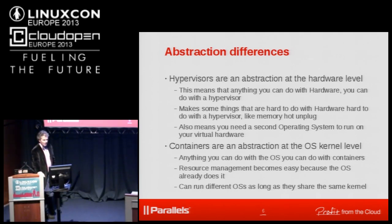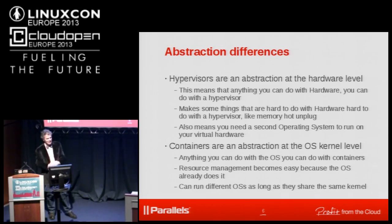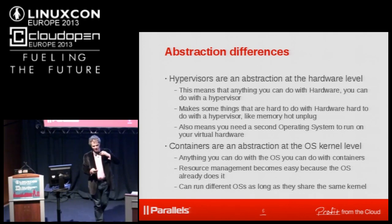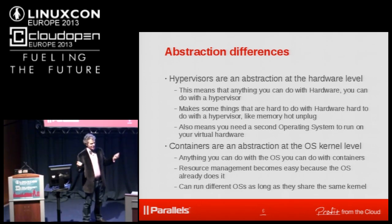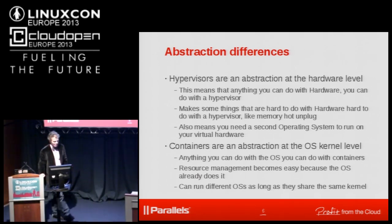Hypervisors are an abstraction at the hardware level; containers are an abstraction at the operating system kernel level. That means hypervisors can do anything hardware can do, while containers can do anything an operating system can do - and an operating system has much more power and flexibility. The key thing containers cannot do that hypervisors can is run different kernels. There's no way in a containerized system to boot Linux in one container and Windows in another.